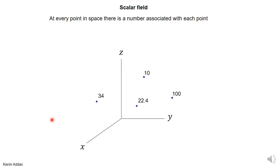A scalar field means that at every point in space, there's associated with that point a number. I just drew here four of the points and put numbers associated with those four points, but in principle, every single point in space should be associated with a number.